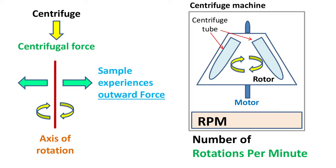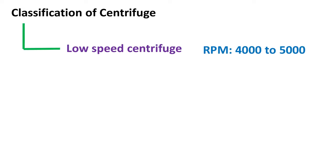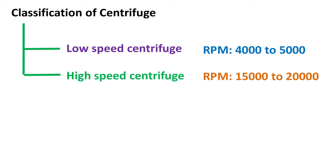Depending on the RPM, the centrifuges can be classified into several types. Low speed centrifuge are the ones that operate at 4000 to 5000 RPM. High speed centrifuges can operate at maximum 15000 to 20000 RPM and are commonly used in most of the labs involved in research.